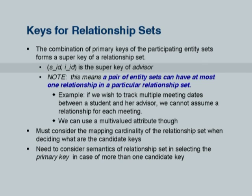The student ID and instructor ID is definitely a super key of advisor, but is it a candidate key? Can just the student ID uniquely identify an advisor relationship? That depends. If the participation of student in the advisor relationship is many-to-one, or if the cardinality constraint notation indicates a student can have at most one advisor, then if I have just the student ID there is only one advisor - I do not need the instructor ID anymore to identify the particular relationship.